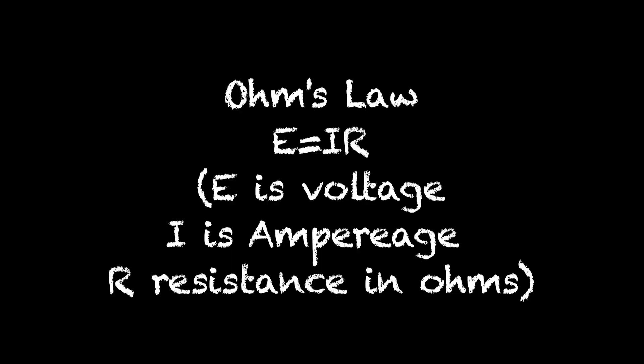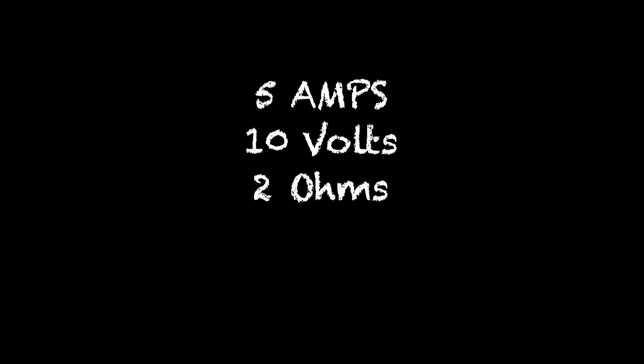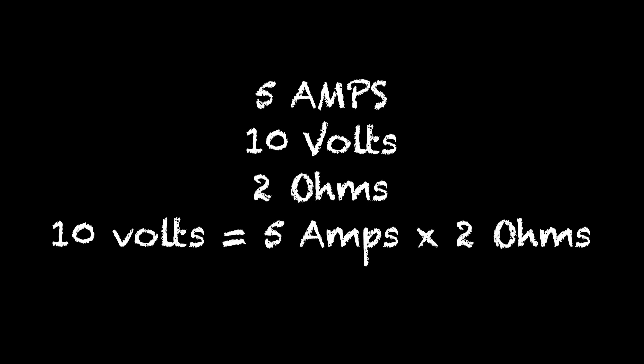The resistance to that flow is what regulates the amount of electricity. So we talk about those three things and the way they work together: voltage, amperage, and resistance. There's a mathematical formula called Ohm's Law that lets you figure out — if I have this amount of voltage and this amount of resistance, I should have this amount of amperage. Or if I have this amperage and this voltage, that tells me how much resistance is in the circuit. You can work it whichever way you need to.